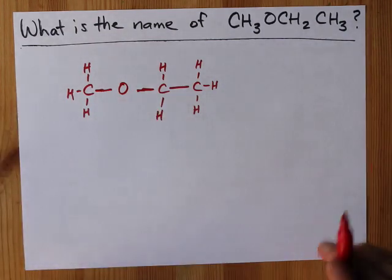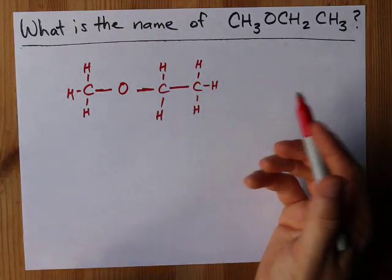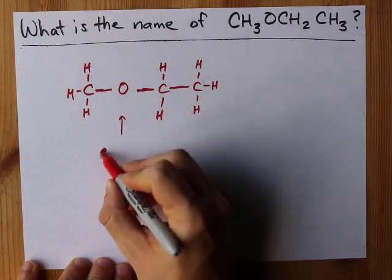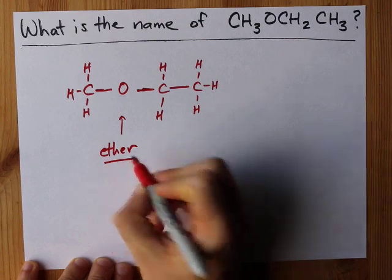Great, we drew it. Capisce. Now, how do you name this? Because we have a single bonded oxygen in the middle, it means we have what's called an ether.